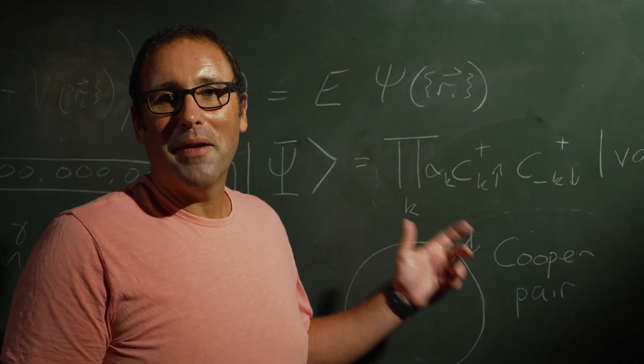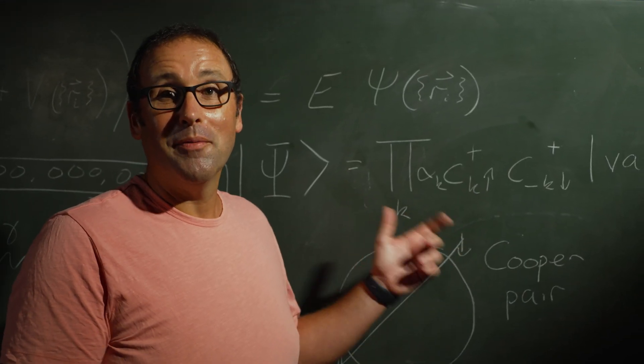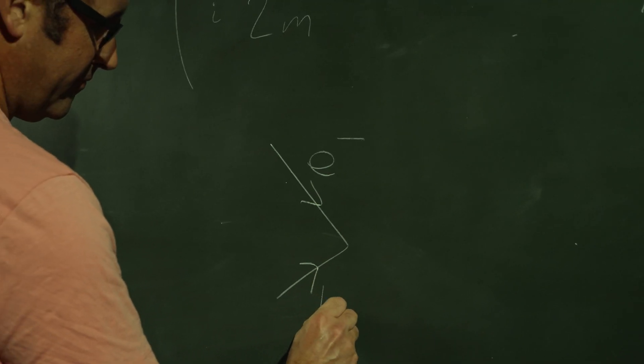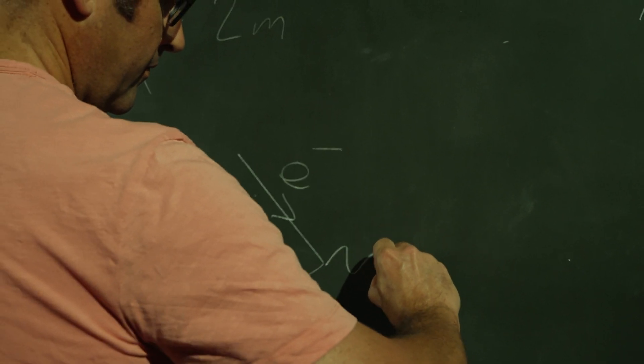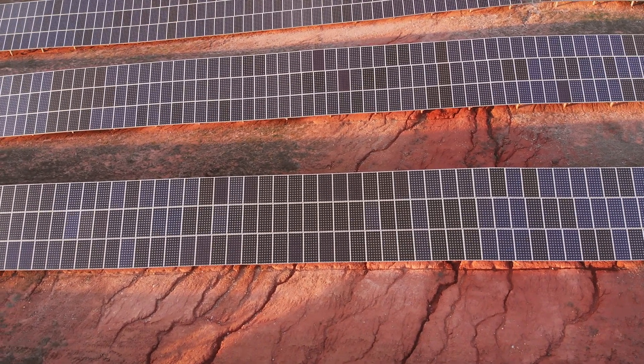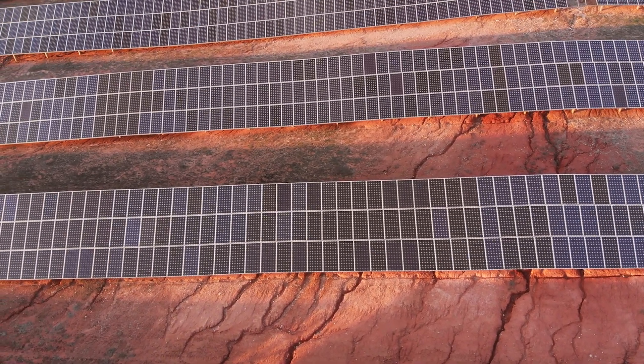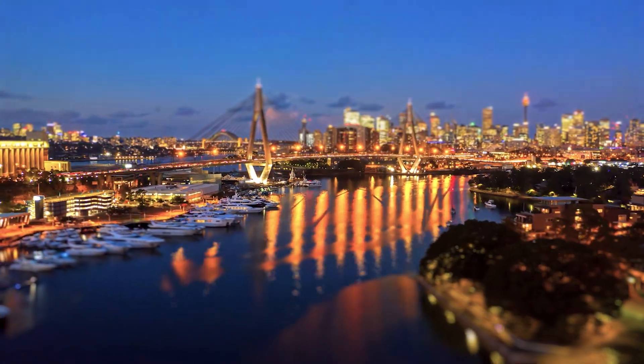These are some of the basic equations that describe superconductors, materials that conduct electricity without losing any energy. If we could make them work at room temperature, we could cover the outback in solar panels and transport all the energy without losing any to capital cities.